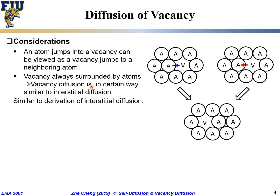Similar to the derivation of interstitial diffusion, if we consider the vacancy diffusion coefficient, we still borrow this concept: 1/6 · γ · α². Alpha is the jumping distance, easy to determine for a fixed lattice. The 1/6 factor assumes a simple cubic lattice. Gamma is the so-called successful jumping frequency — here I put a subscript v, meaning successful jumping frequency of the vacancy.